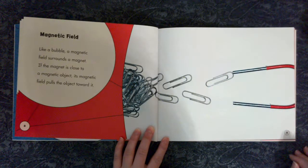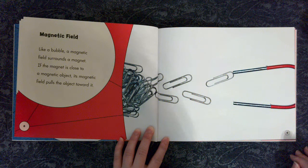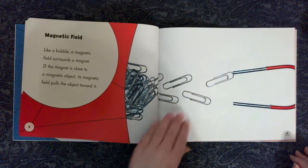Magnetic field. Like a bubble, a magnetic field surrounds a magnet. If the magnet is close to a magnetic object, its magnetic field pulls the object toward it.